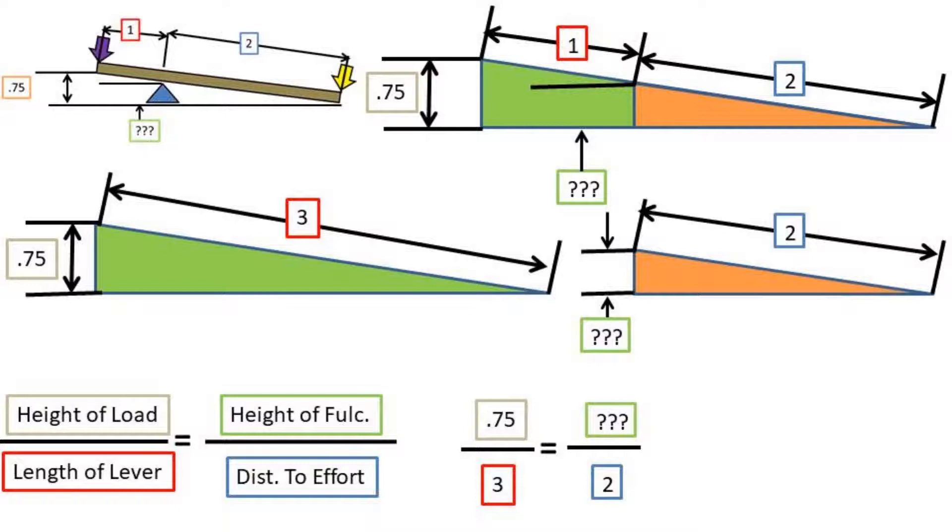So we will take the height of 0.75 meters at the load end and divide by the total length of the lever. We will then set it equal to the height of the fulcrum, which is an unknown, over the distance to the effort end from the fulcrum.